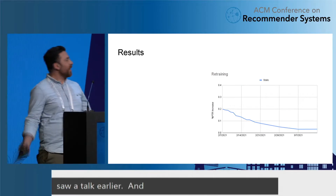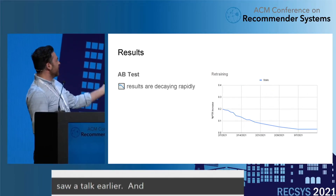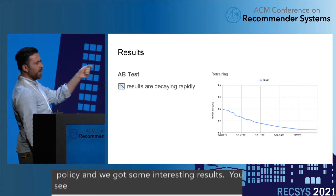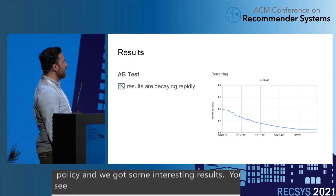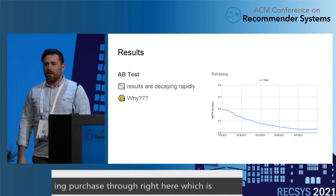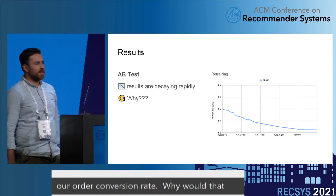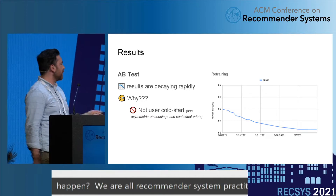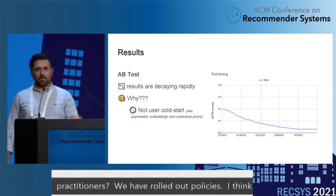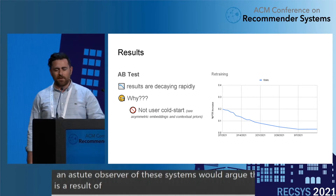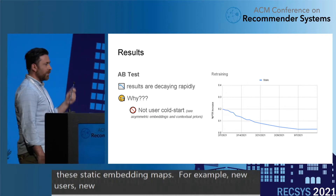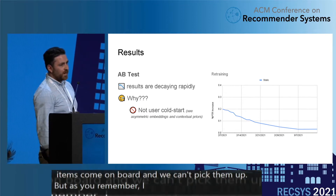We rolled out this new policy and got some interesting results. We saw a rapidly decaying purchase-through rate, which is our order conversion rate. Why would that happen? An astute observer would argue this is the result of these static embedding maps — for example, new users and new items come on board and we can't pick them up. But we have these asymmetric embeddings and contextual priors that help with that situation. Let's consider another hypothesis: what about drift? Here's a quick way to test if you have drift in your system — make a training set over some time period and make a bunch of test sets that are skewed. If you see an inverse correlation between the age of your training set and your metrics, you're likely experiencing drift.